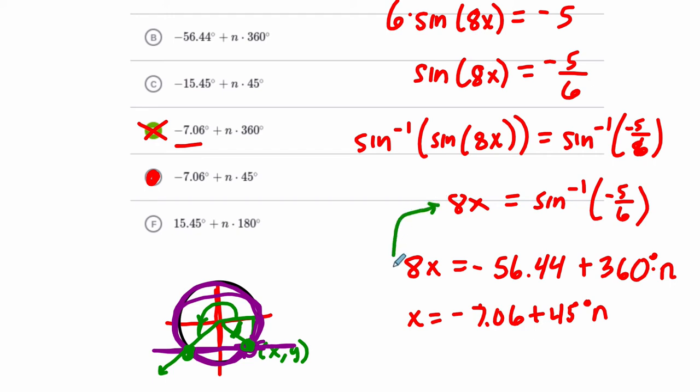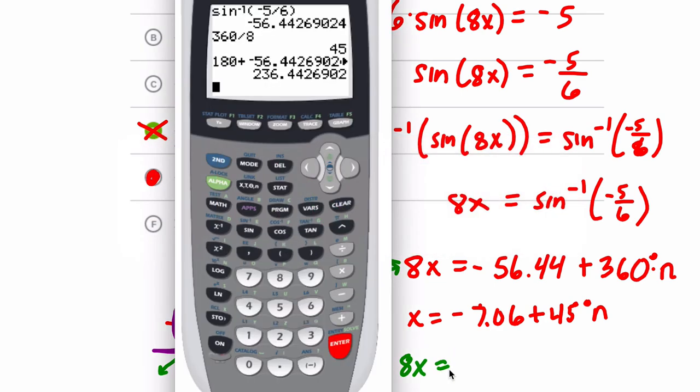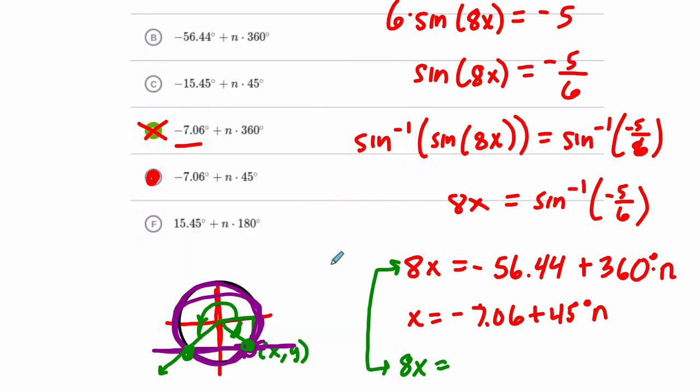So, 236.44 degrees will have the same sine. So, that means that 8x could also equal 236.44 plus any amount of rotations. So, that's going to give us, we divide that by 8, it's going to give us 45 degrees here in the end, but I'll just write it out for now, and I'll scroll down.